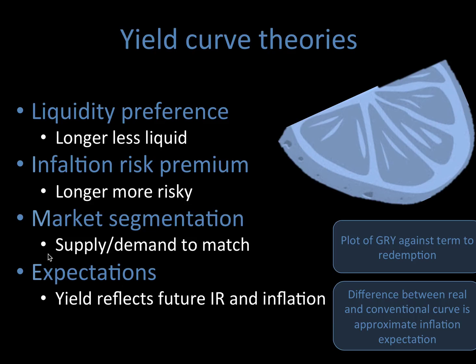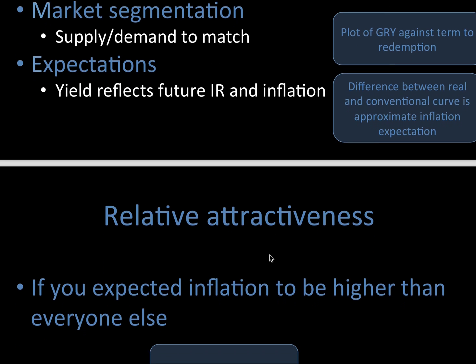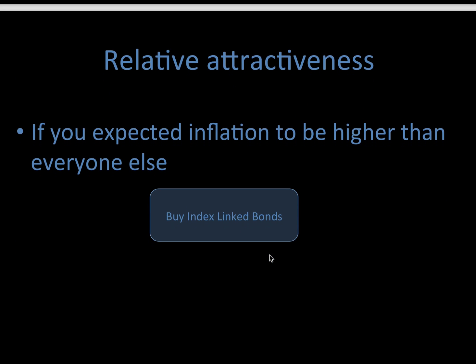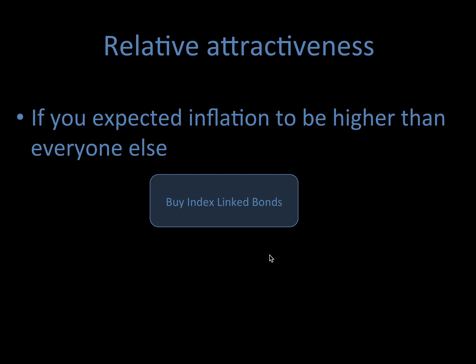And then your expectations — this is the main one, where the yield reflects future interest rates and inflation. For relative attractiveness: if you expect inflation to be higher than everybody else, buy index-linked bonds, because once inflation hits, everybody's going to be wanting to buy those things, and you can sell them and make a lot of money.